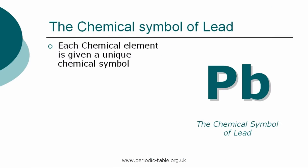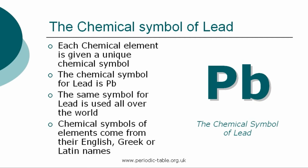Each chemical element is given a unique chemical symbol, which is used all over the world. The chemical symbol for lead is Pb. The chemical symbols of elements come from their English, Greek, or Latin names. The first letter of a symbol is always a capital letter, and if there are any subsequent letters, they are expressed in lowercase.